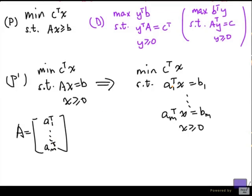And A is my matrix with rows a1 transpose up to am transpose. So we want to take a linear combination of these constraints here. So we take this times y1 and so on, this times ym.